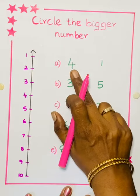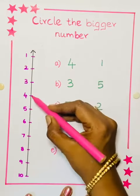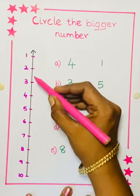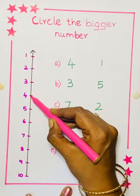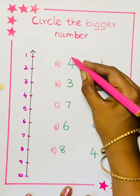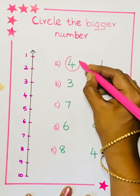See the first sum. 4, 1. 4 yengarukhu? 1, where is 1? Here. So, which is bigger? 1 is bigger or 4 is bigger? 4 is bigger. So, we have to circle 4.